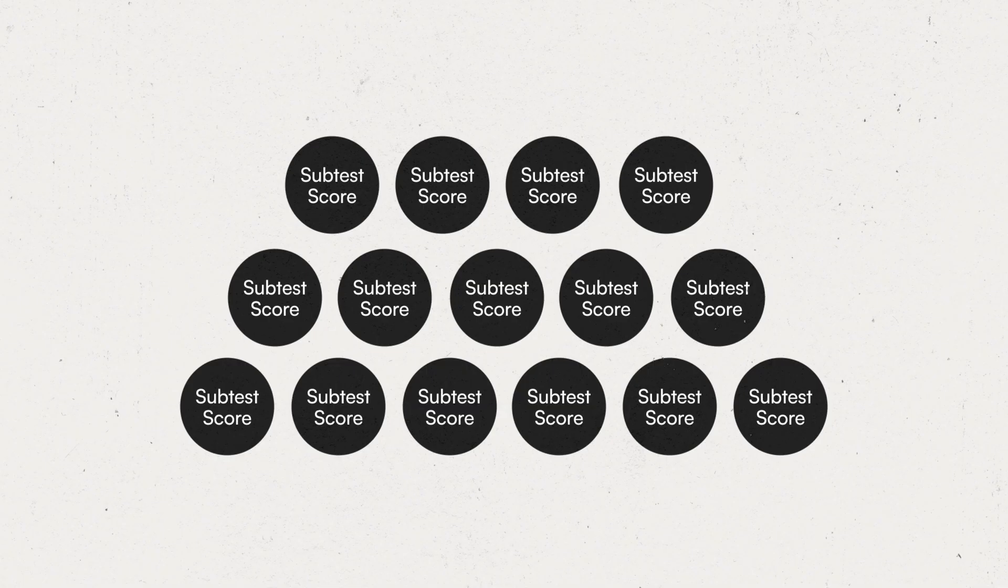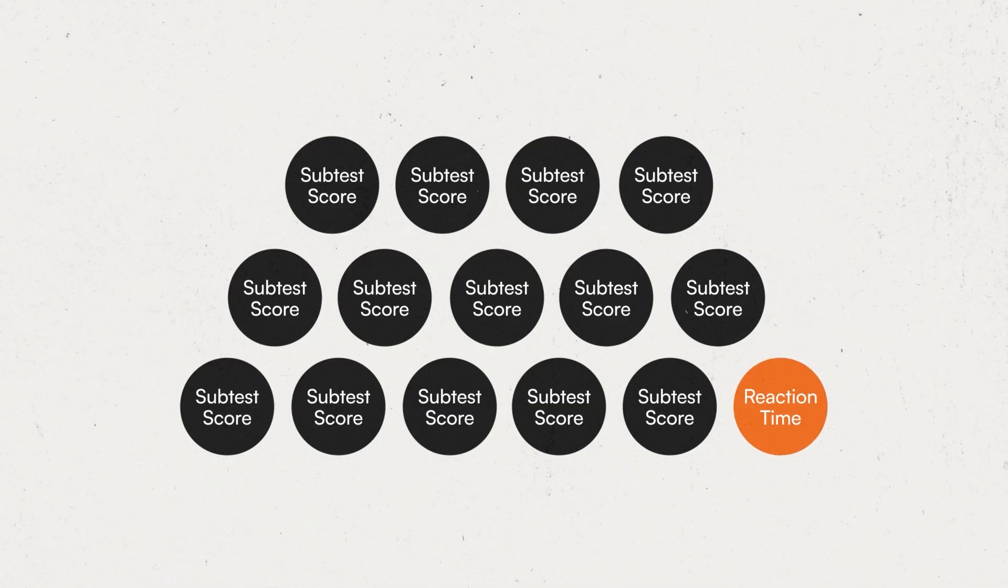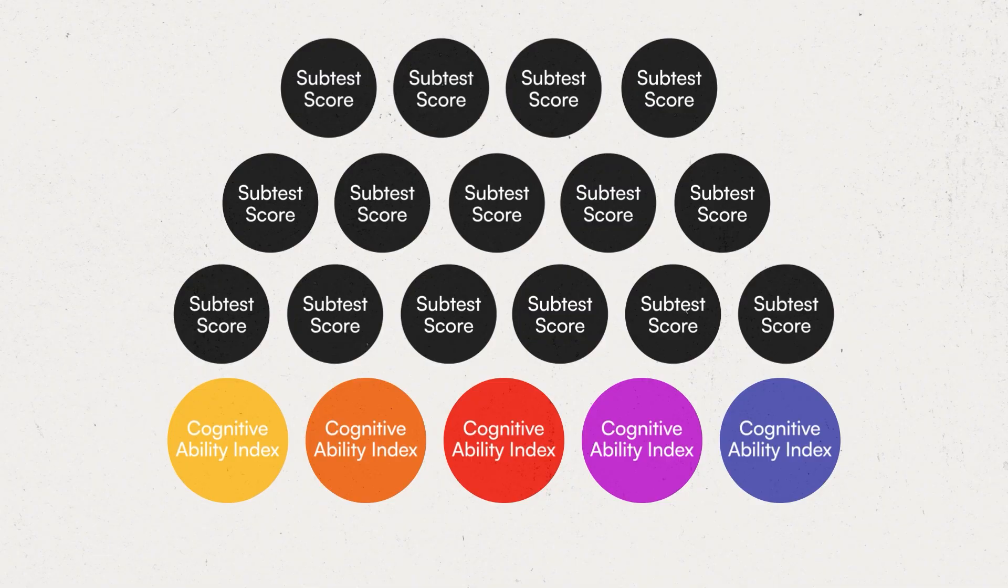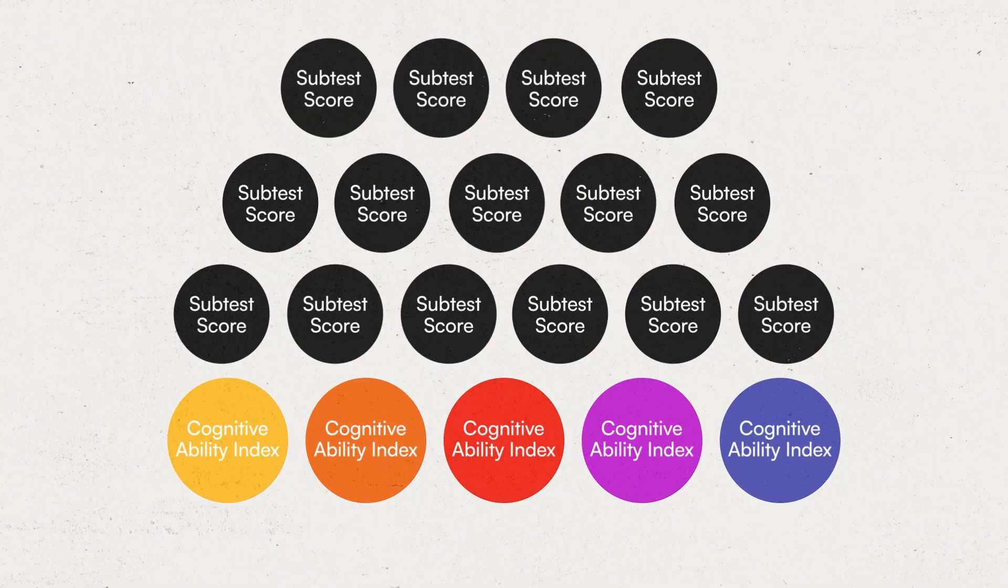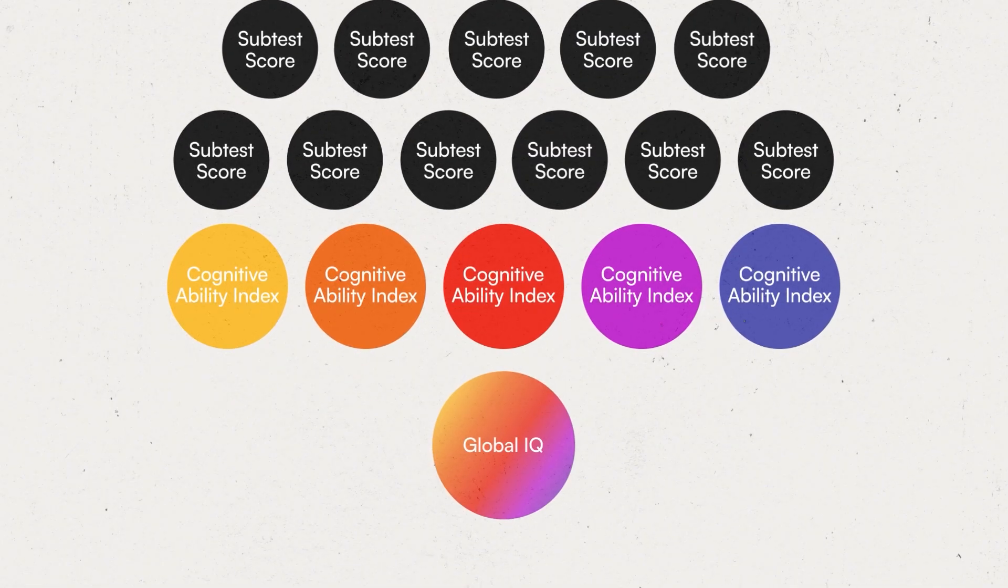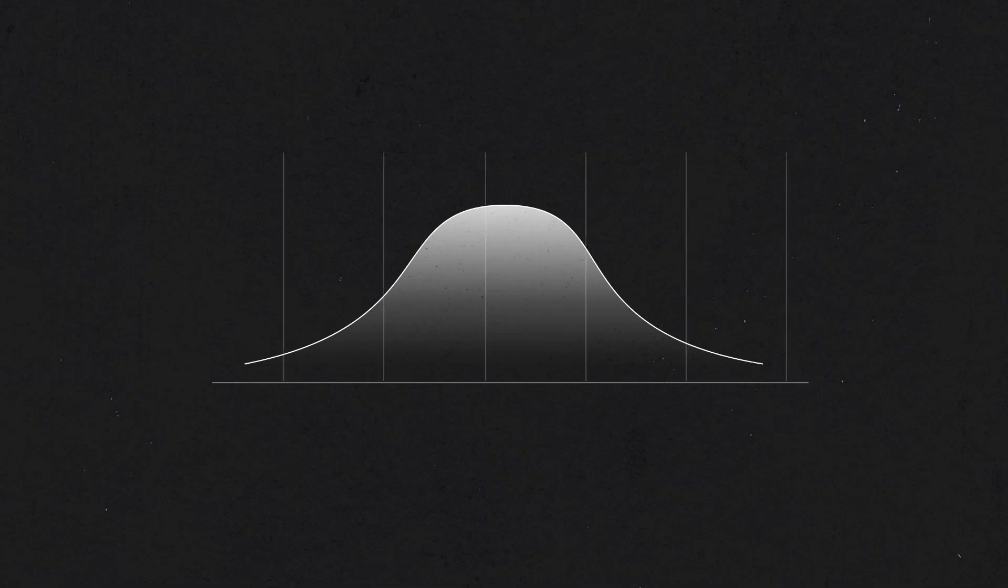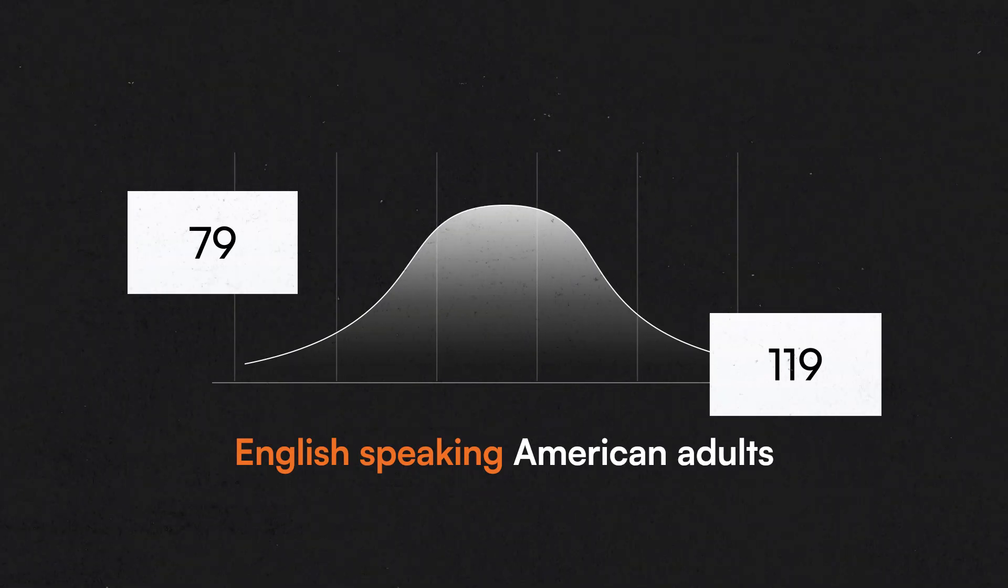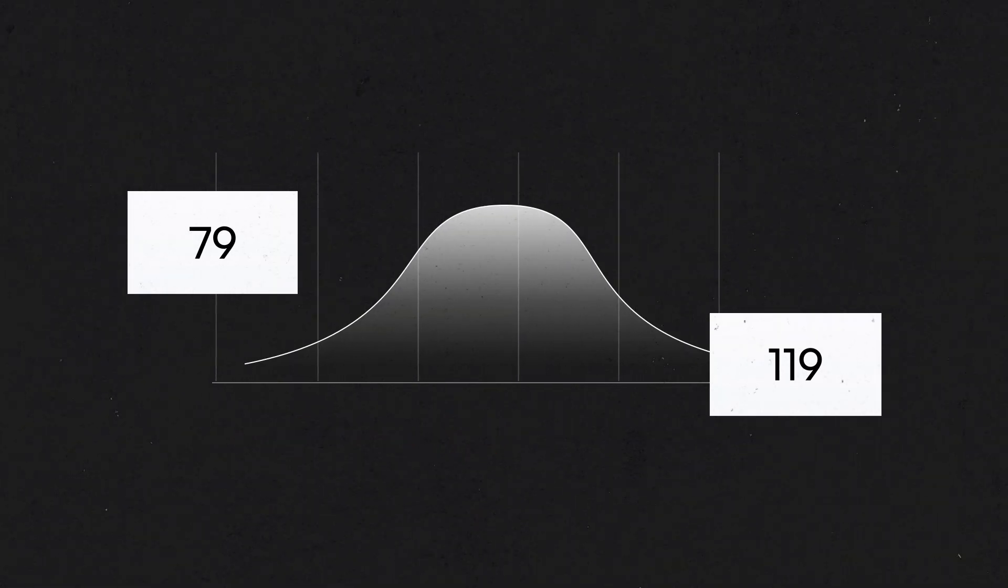The RIOT produces 21 scores in total: 16 scores from all 15 subtests, because the Reaction Time subtest produces two possible scores, one score for each of the five Cognitive Ability Indexes, and finally a Global IQ. Each score is calculated by comparing the examinee's test performance to a representative sample of English-speaking American adults. These scores are standardized so that the scores are comparable to one another.